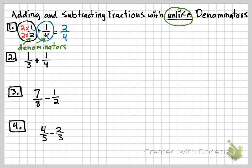I still have the plus one-fourth there. Now if you can see, the denominators are the same — we have four and four. So now I can add this fraction, now that the denominators are the same. I keep the four and add the numerators. Two plus one is three, so this is three-fourths.